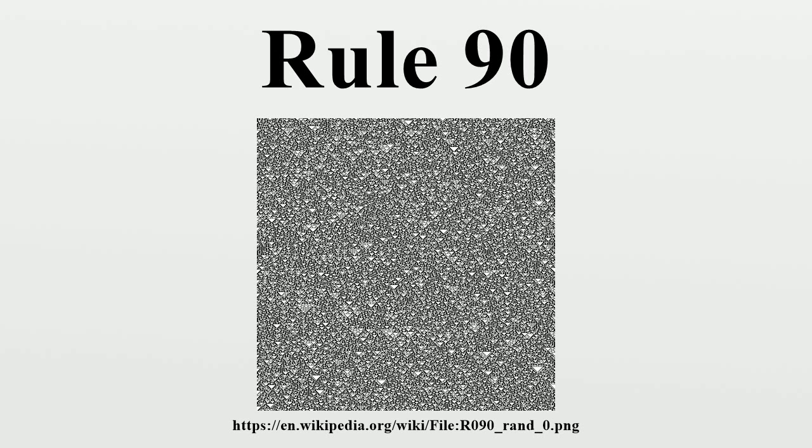Martin, Odlyzko, and Wolfram call it the simplest non-trivial cellular automaton, and it is described extensively in Stephen Wolfram's 2002 book A New Kind of Science. When started from a random initial configuration, its configuration remains random at each time step. However, any configuration with only finitely many non-zero cells becomes a replicator that eventually fills all of the cells with copies of itself.